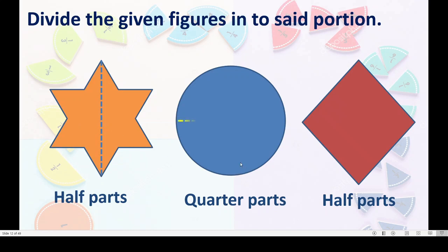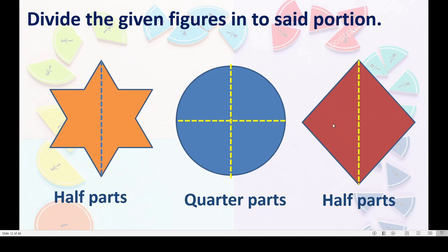About the circle: one horizontal cutting and one vertical cutting gives us four equal parts. Each part is called a quarter part, and here we have four quarters. Now we will move to the diamond shape. Here also we divide this diamond into two halves — we got two equal parts. That is nothing but half of this diamond and half of this diamond.